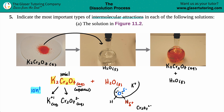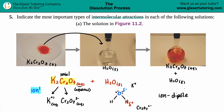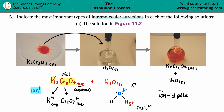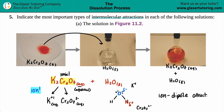This type of attraction is called ion-dipole: it's called 'ion' because that comes from the ionic compound K₂Cr₂O₇, and 'dipole' because we're dealing with the partial negative and partial positive charges of H₂O. This describes how K₂Cr₂O₇ comes in contact with H₂O — the ionic compound provides the ion attraction and the covalent compound provides the dipole. Whether you call it an ion-dipole attraction or an ion-dipole force, either is fine — these are your intermolecular attractions.